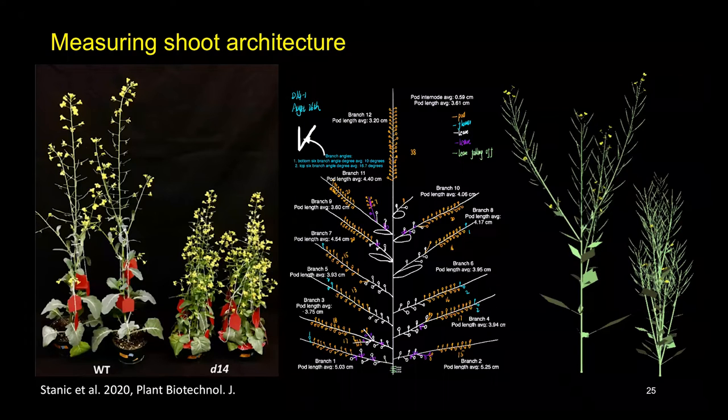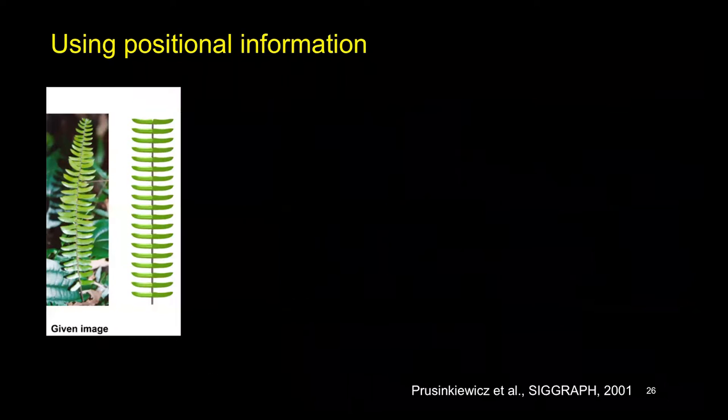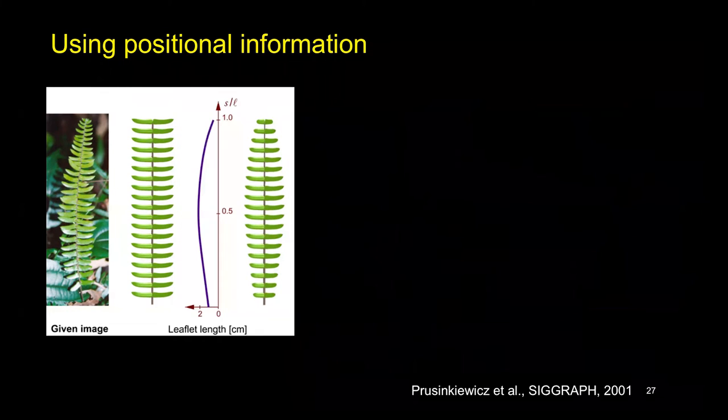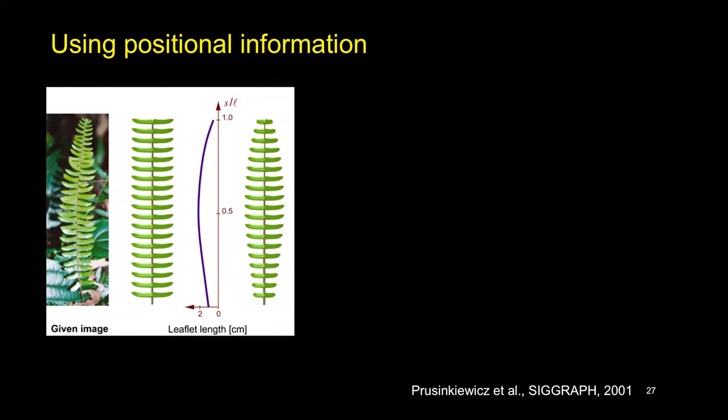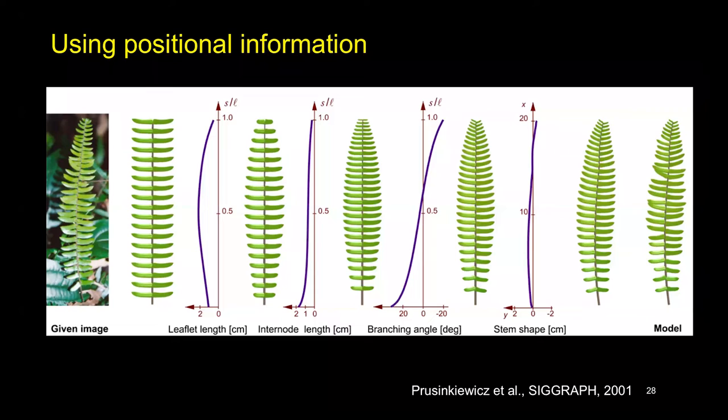Instead, to create calibrated models quickly, we use L-system-based models with positional information and visual calibration. This method was originally proposed for creating plant models in computer graphics. Starting with a reference image and a generic model, we use the plant axis as a reference to express lengths of leaflets as a function of their position along this axis, resulting in different lengths of leaflets based on their position. We treat other parameters the same way and arrive at the final model that resembles the given image. We used and extended this method to calibrate a model of canola.